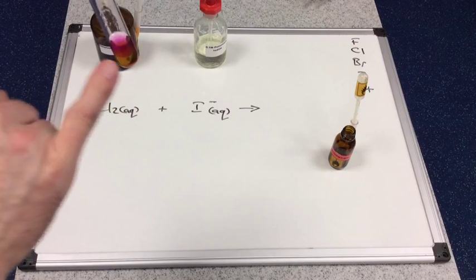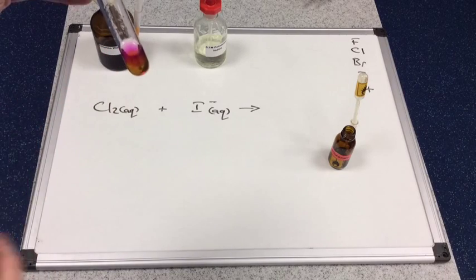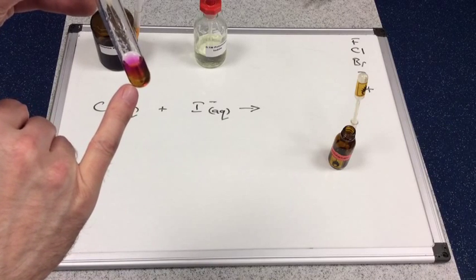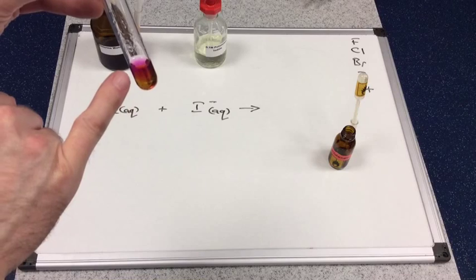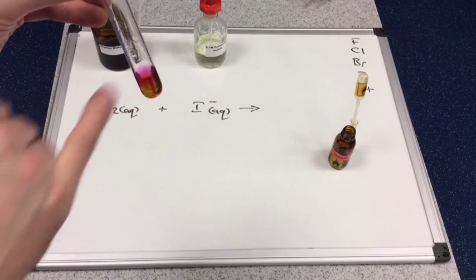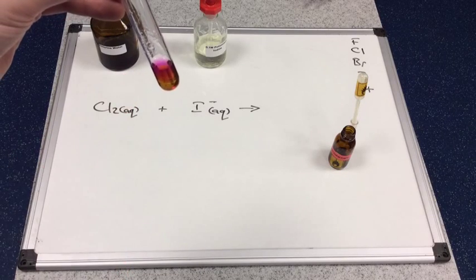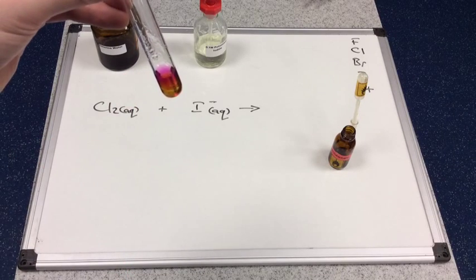So we've got iodine in this test tube. Iodine's purple. So when it's in aqueous conditions it's kind of a brown color, and it dissolves fully into the cyclohexane non-polar layer and we see its true purple color. So there's confirmation that we've got iodine in this test tube.